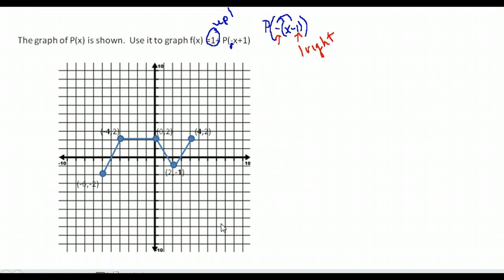Let's start with the point negative 6, negative 2. Multiply the x value by negative 1: negative 6 times negative 1 gives positive 6, flipping it to the other side of the graph. Then move 1 to the right to get 7. For the y value, move up 1 from negative 2 to negative 1. So we end up at the point 7, negative 1.